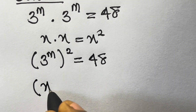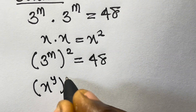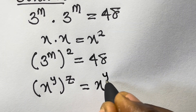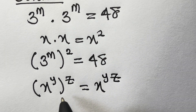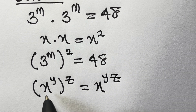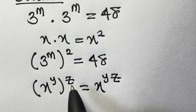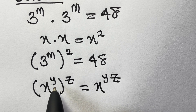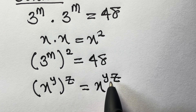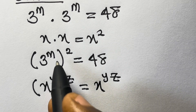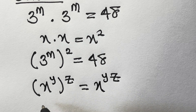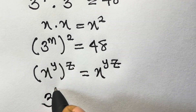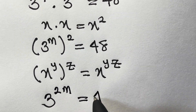From our law of indices, when we have x to power y, all raised to power z, this equals x to power y times z. So when a number in a certain power is again raised to another power, the powers are multiplied. Applying this, our expression becomes 3 to the power 2m equals 48.